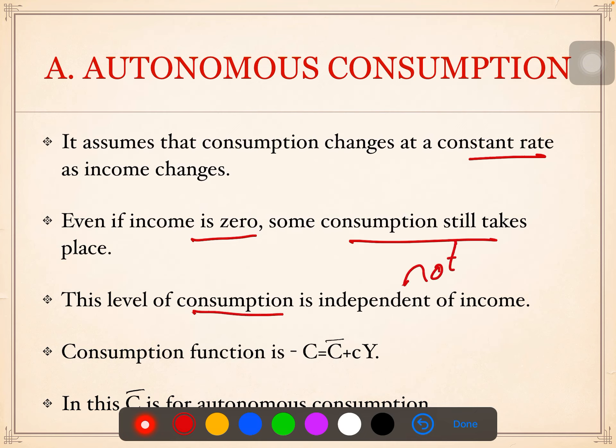In the case of autonomous consumption, consumption is not dependent on income. Whether income is increasing, decreasing, or zero, consumption of a few basic goods definitely takes place. That's why autonomous consumption is called independent of income, and that is why it is constant — basic goods will be purchased at any cost regardless of income level.